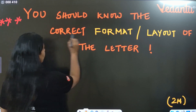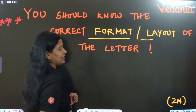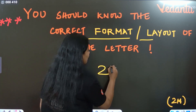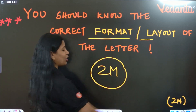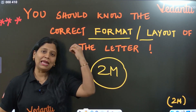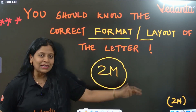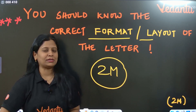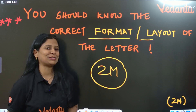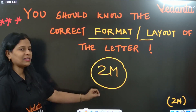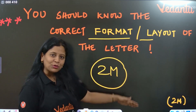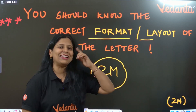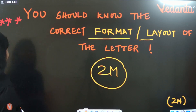You should know the perfect correct format or layout of the letter. For writing the correct format, you are allotted two marks. So even if you can't write the content well, just get the format correct and you will get two marks out of ten. Every major discourse and every minor discourse has a proper format. For letter writing, there is a proper layout. Keep this in mind — it's a very very important point.